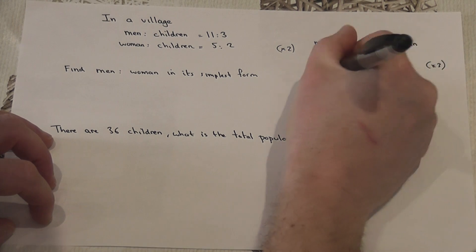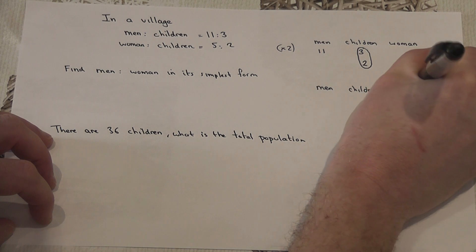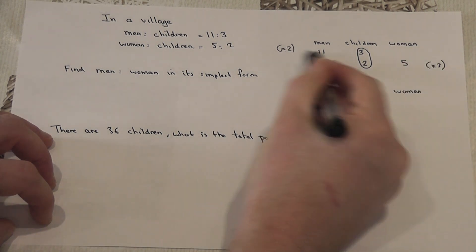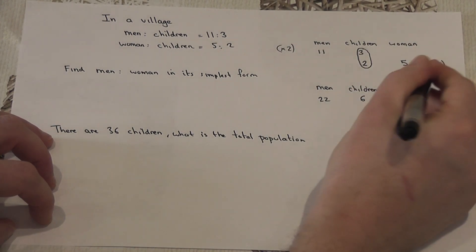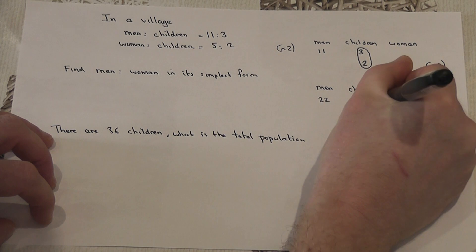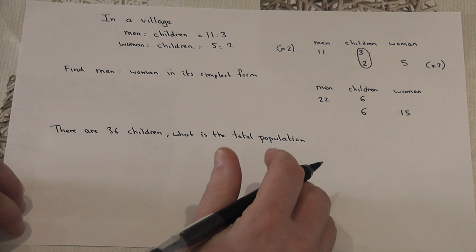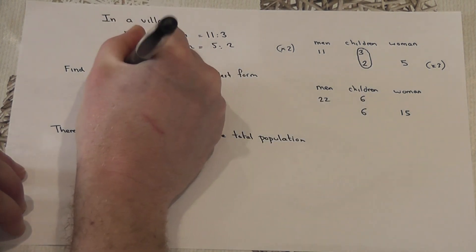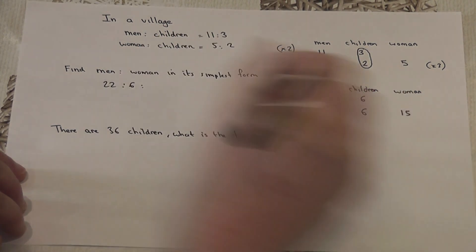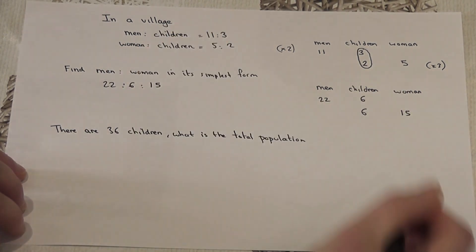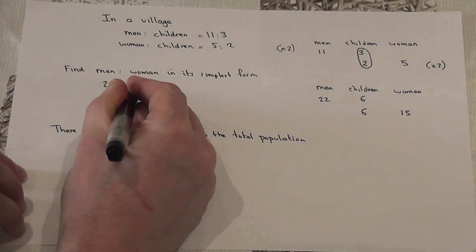Let's review the table. We've got men, children, and women. Two 11's are 22, two 3's are 6. The bottom was times by 3: 3 times 2 is 6 and 3 times 5 is 15. So this means that for every 22 men there are 6 children, and for every 6 children there are 15 women. So the overall ratio is 22 to 6 to 15.